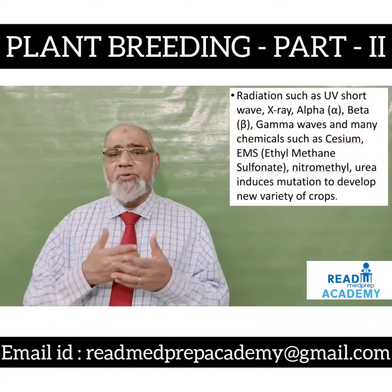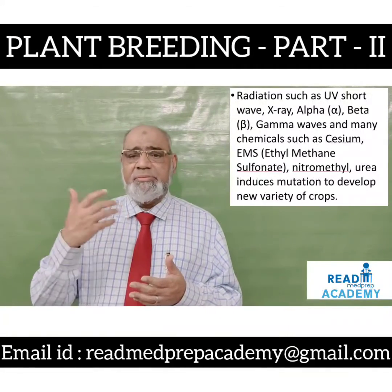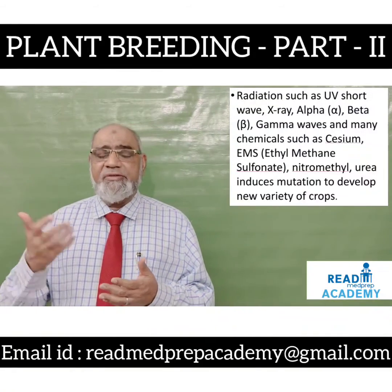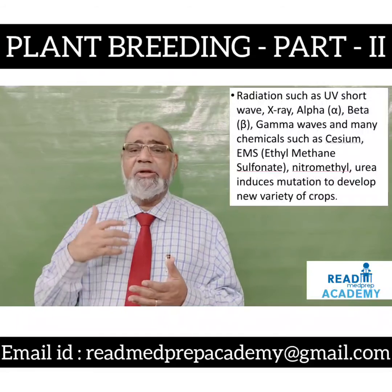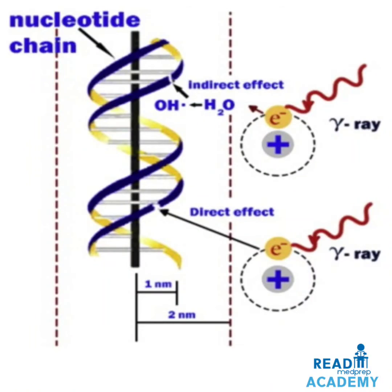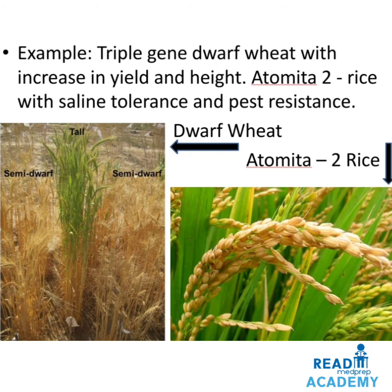Radiation such as UV shortwave, X-ray, alpha rays, beta rays and gamma waves, and many chemicals such as cesium, ethylmethane sulfonate (EMS), nitromethyl urea, induce mutation to develop new varieties of crops. The image shows the nucleotide chain and the effect of gamma rays, which can have an indirect or direct effect to damage the nucleotide. Example: triple gene dwarf wheat with increase in yield; semi-dwarf varieties are shown on either side with the tall variety in the center. Atomita-2 rice with saline tolerance and pest resistance is another example.